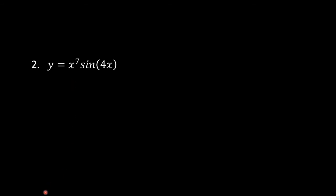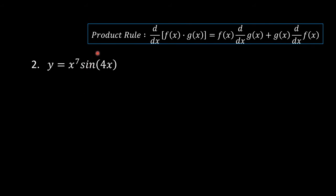Number 2: y is equal to x raised to the exponent of 7 times sine of 4x. We are going to apply the product rule for derivatives. The derivative of f of x times g of x with respect to x is equal to f of x times the derivative of g of x with respect to x.